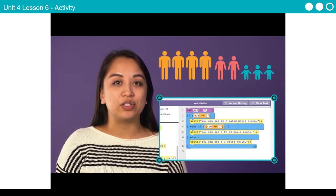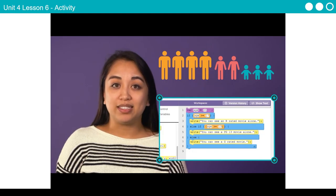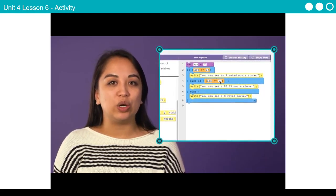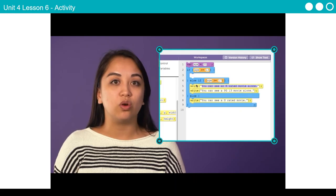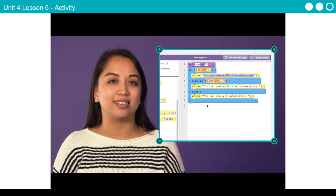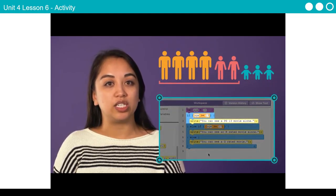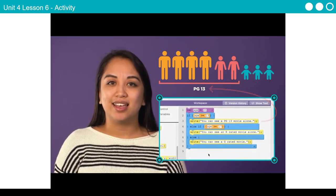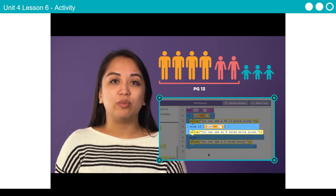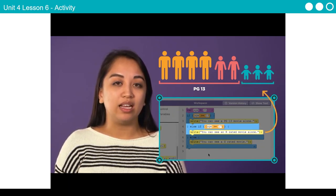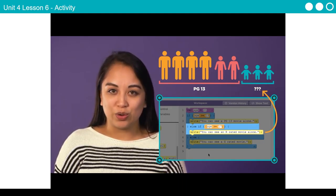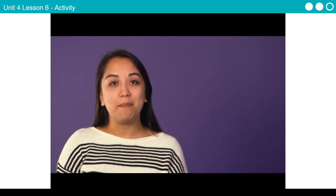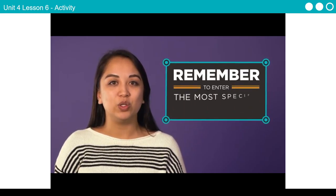Be careful as you construct longer sequences of else-if statements — if you mix up the order, you might not get the behavior you intended. For example, if you switched the code so that the first condition checked if the user was old enough for PG-13 movies, everyone 13 or older would be told they can only see PG-13 movies, even adults. The computer checks conditions from top to bottom, so it is important to enter the most specific condition first.